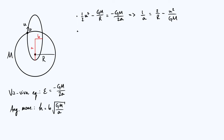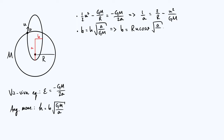For the second equation, rearranging for B: B equals H times the square root of A over GM. We already know A in principle, so the only unknown is H — the specific angular momentum. Our projectile starts at distance R from the centre. To get angular momentum we take R, multiply by the perpendicular component of the initial velocity, and since it's per unit mass we don't include the mass. Using the diagram, the perpendicular component of u is u cos theta. So the specific angular momentum H is R·u·cos theta, and therefore B equals R·u·cos theta times the square root of A over GM.